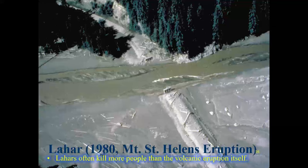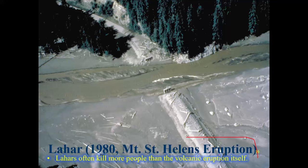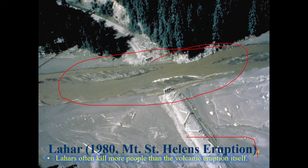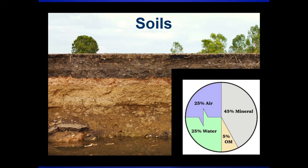In 1980 when we had Mount St. Helens — the largest eruption in contiguous U.S. history — the lahars actually killed more people than the volcanic eruption itself. This was when all of the snowmelt and heavy rain came and mobilized all that volcanic ash, actually wiping out large sections of the area. That's a quick overview of some mass wasting processes.